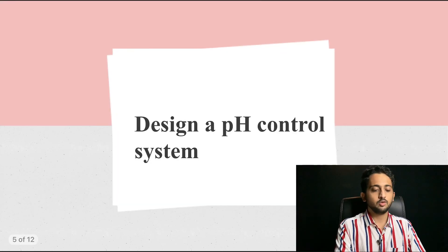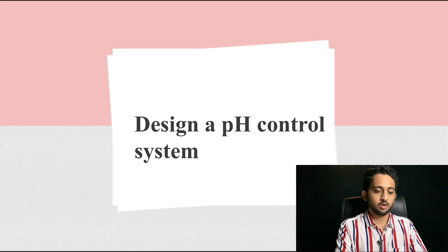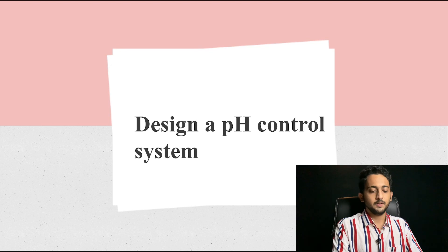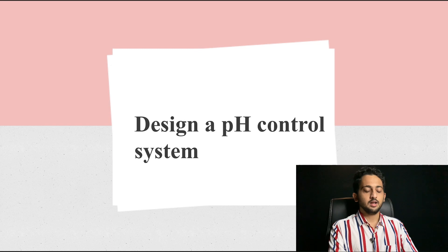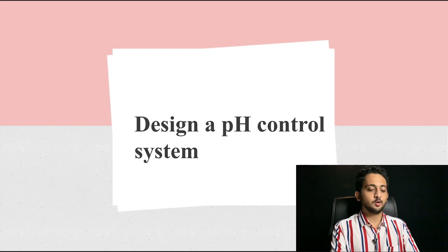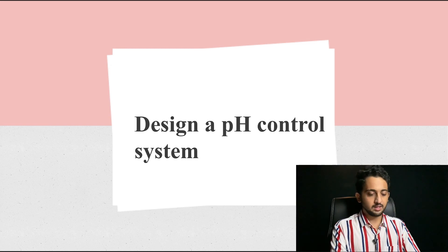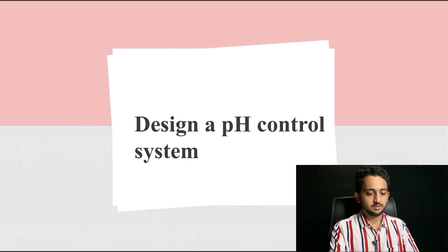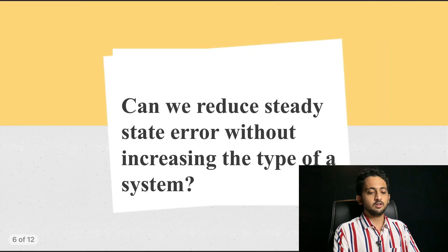The next question in control systems was to design a pH control system — pH being the negative logarithm of hydrogen ion concentration. I had no idea how to design this. At this point I thought I should not have listed control systems as a favorite subject, because I was hardly able to attempt any question in it and that was giving a bad impression.